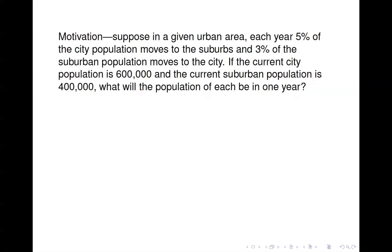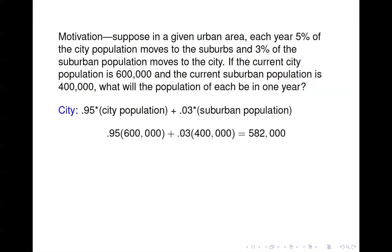Assume the current city population is 600,000 and the current suburban population is 400,000. What will the population of each be a year from now? Next year the city population is going to be 95 percent of what it is now, because each year five percent leave, so we keep 95 percent. Then three percent of the suburban population moves to the city, so we add 0.03 times 400,000. That gives us 582,000.